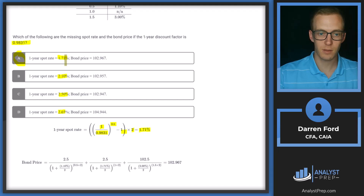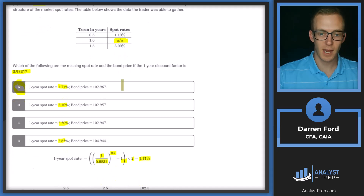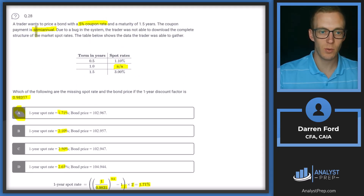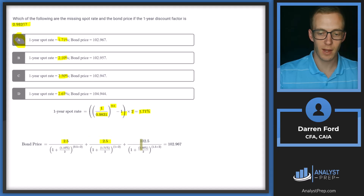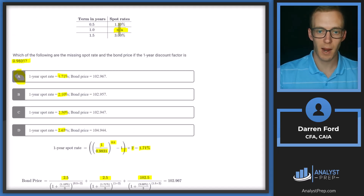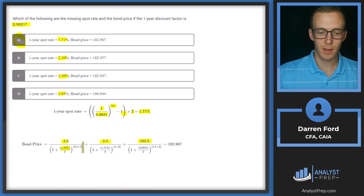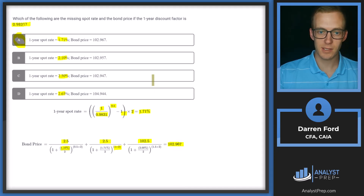We'll go ahead and calculate the bond price. With a 5% semi-annual coupon, cash flows are 2.5, 2.5, and 102.5. We discount each cash flow back at its corresponding spot rate — 1.1% at the half-year mark, and so on. After working out the math, we get a bond price of 102.967, which corresponds to answer A and not to B, C, or D. So we can confidently go with answer A.